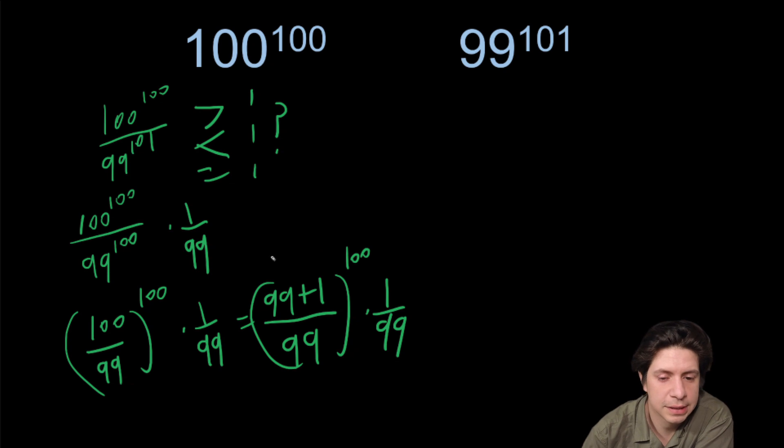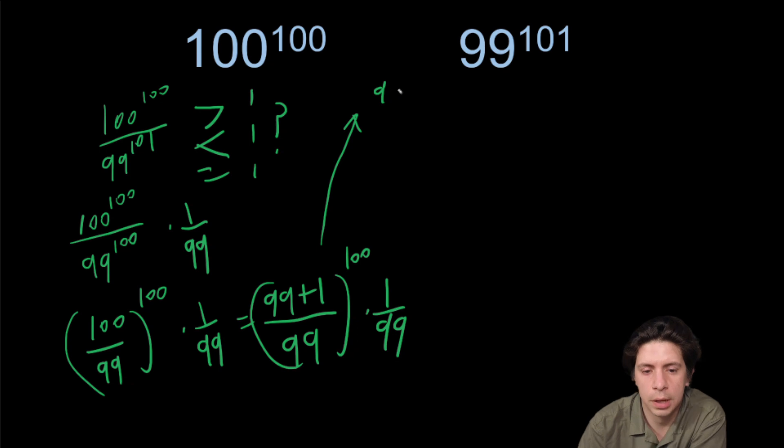And we can split this up into one because 99 over 99 is one, plus one over 99 to the 100.